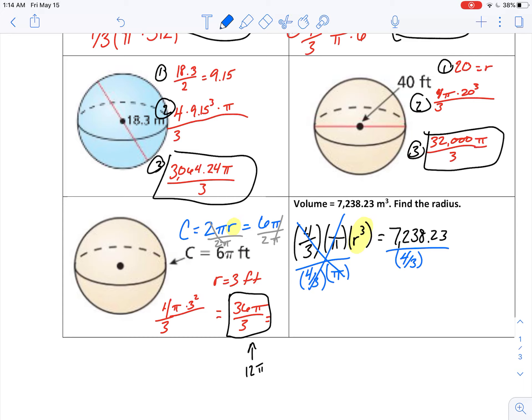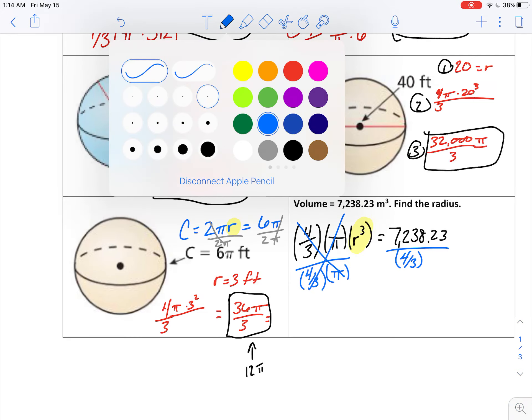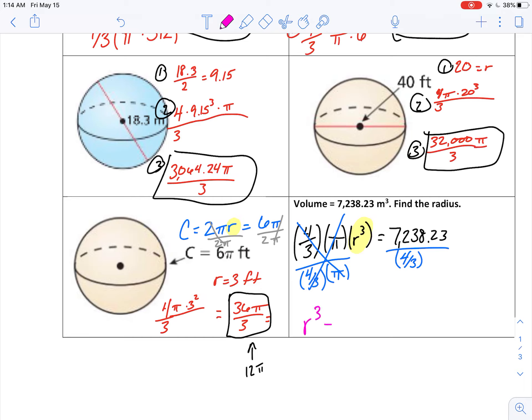Those are going to reduce to nothing over here. I'm left with just r cubed. And if I take 7,238.23, divide that by pi, and then divide that by 4 thirds, then I'll get about 1,728. Now, r cubed is 1,728.